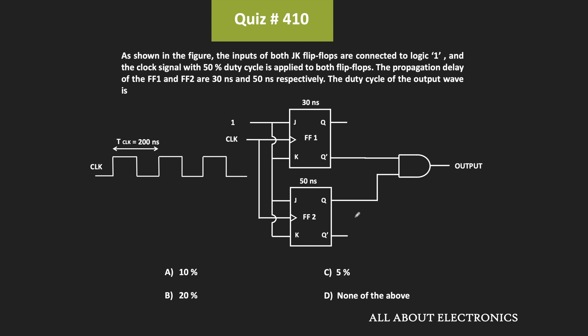As you can see, both the inputs of the JK flip-flop are connected to logic one, and this clock signal is applied to both flip-flops. The propagation delay of the two flip-flops are 30 ns and 15 ns respectively. This clock signal is applied to both flip-flops, and its duty cycle is equal to 50%, while its time period is equal to 200 ns.